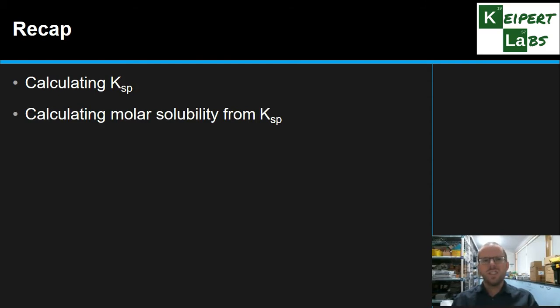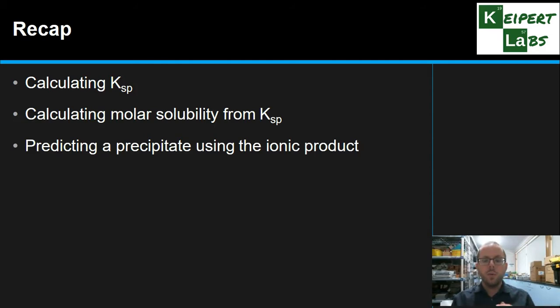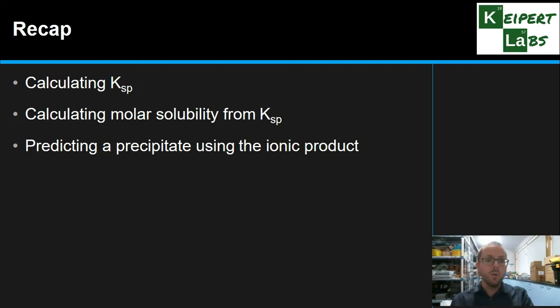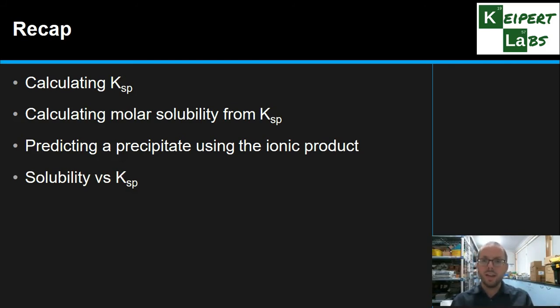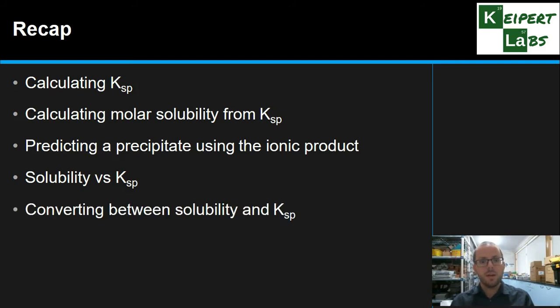So we've looked at how to do calculations involving KSP — calculating it from molar solubility and working the other way around. We looked at how to use the ionic product, which is this particular version of Q, to predict whether a precipitate will form: are concentrations too high so it will precipitate, too low so more could dissolve, or at equilibrium? We also looked at the difference between solubility and KSP — related ideas but not the same — and how to convert between the two. Thanks very much for watching. Don't forget to like and subscribe.